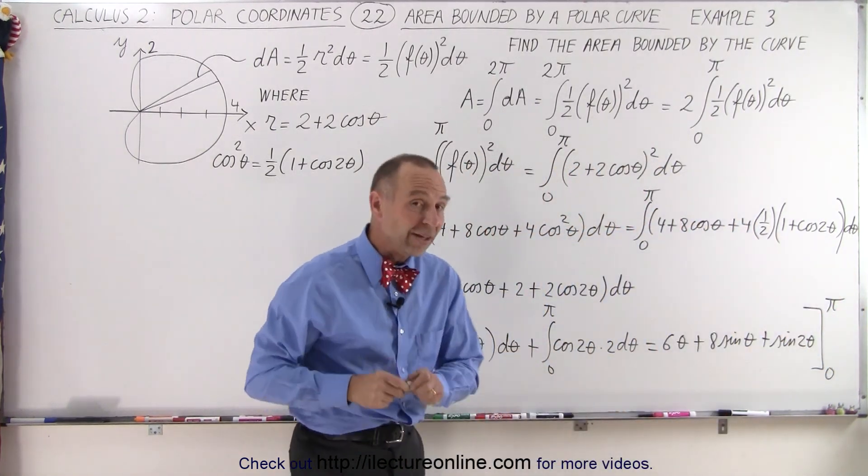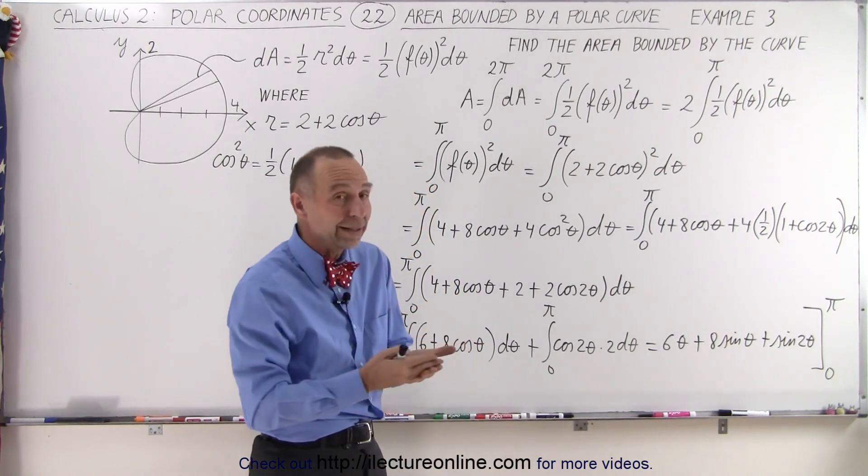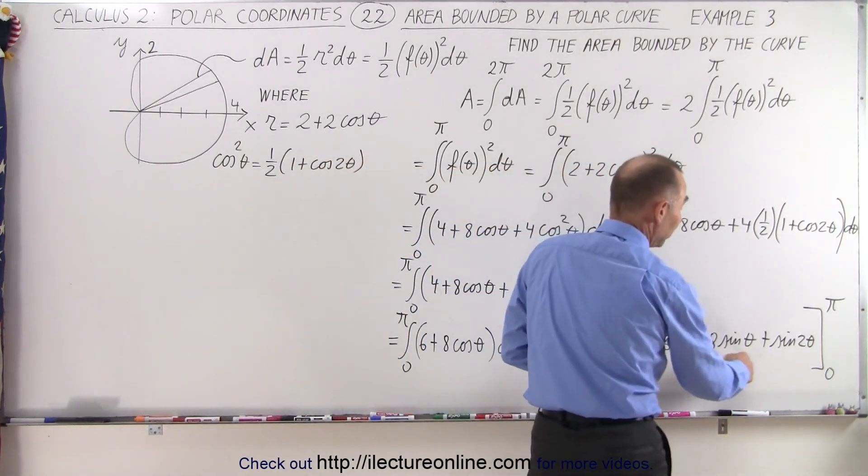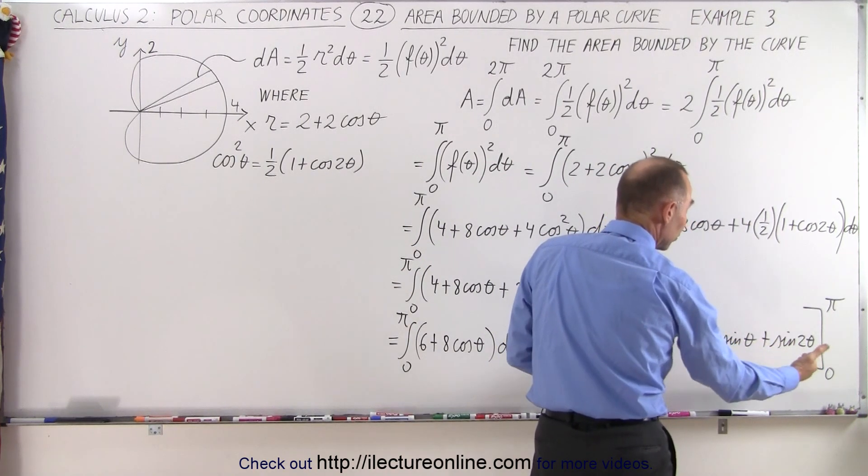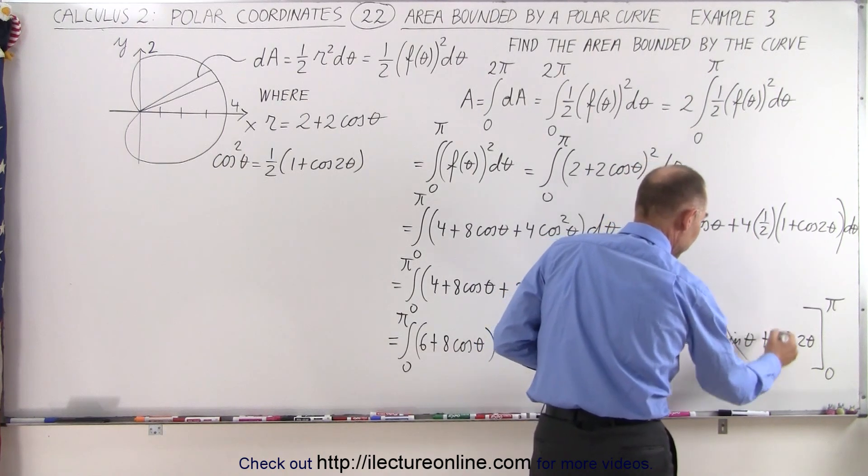Now whenever we're dealing with the sine and we're evaluated from 0 to pi, that usually ends up with 0, because the sine of 0 is 0, and the sine of pi, or the sine of 2 pi, is 0 as well. So these two terms drop out when we evaluate them.